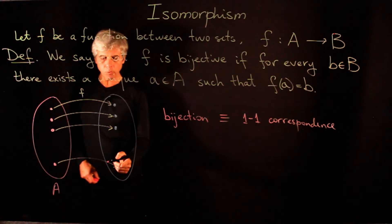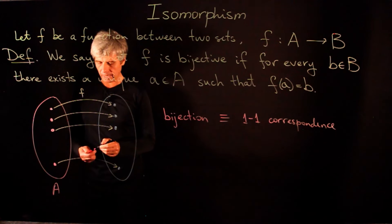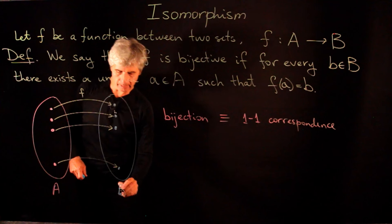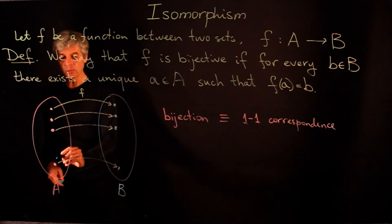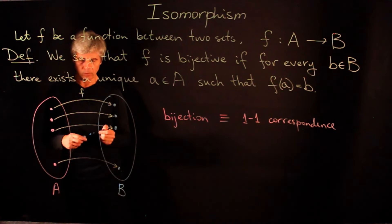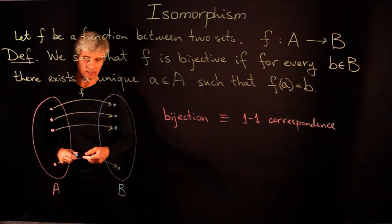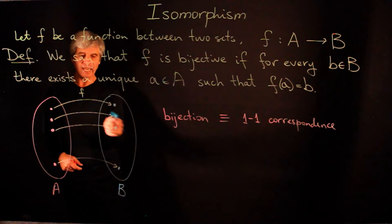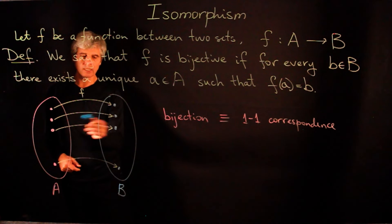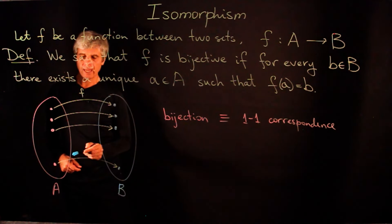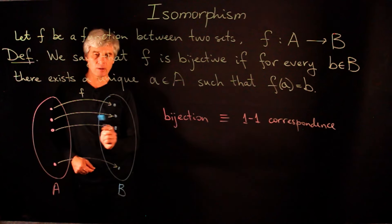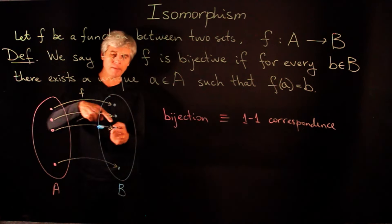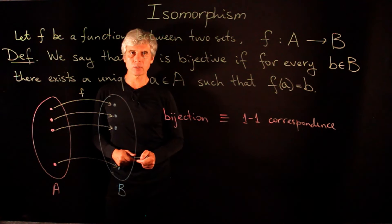What's important for us is that every element of the set B has a unique preimage. This means that for each element in the second set there is exactly one arrow going to it from the first set. We don't have two elements of set A that are mapped to the same element of set B.